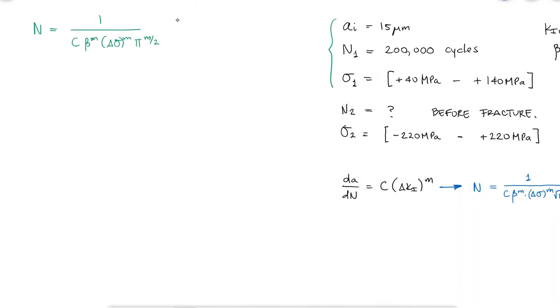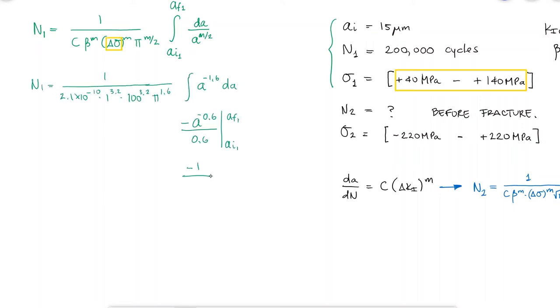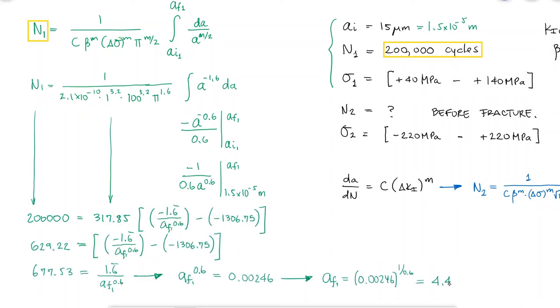From the first 200,000 cycles, and knowing that the initial crack length was 15 microns, and that the stress range is 100 MPa, we can find the final crack length after those 200,000 cycles.